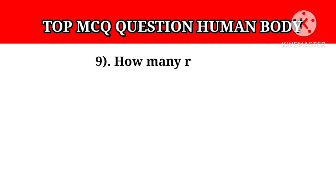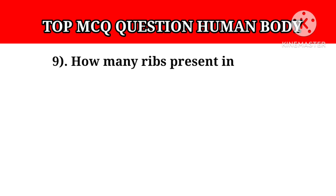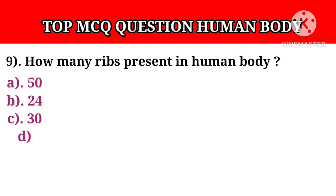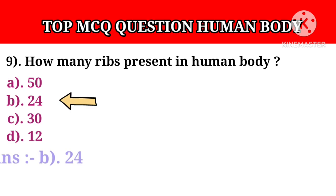Question number 9: How many ribs are present in the human body? Option A: 50. Option B: 24. Option C: 30. Option D: 12. Answer B: 24.